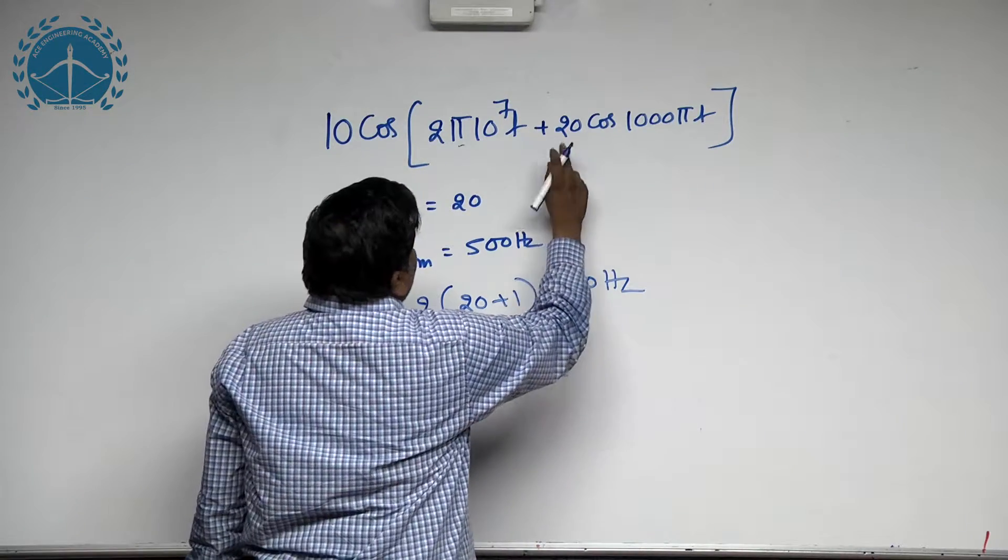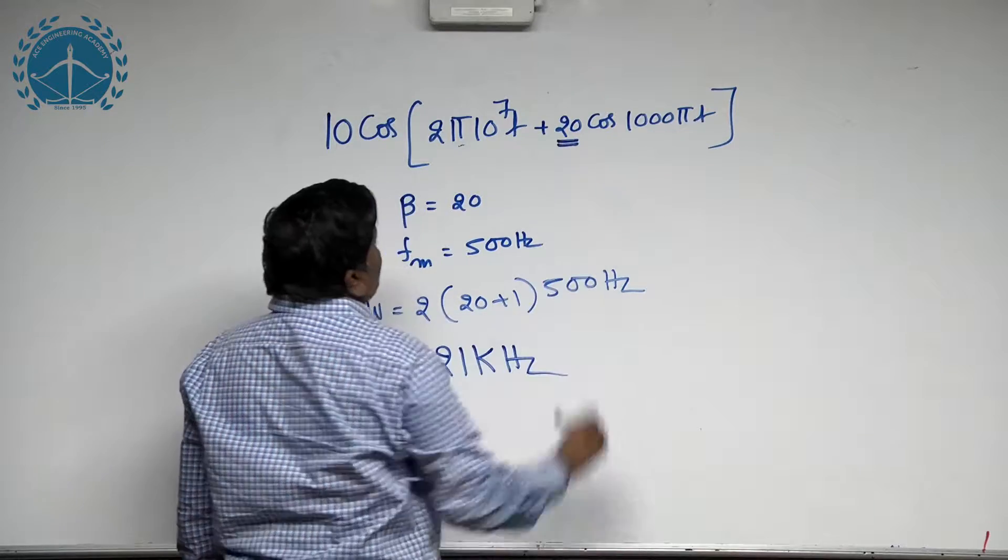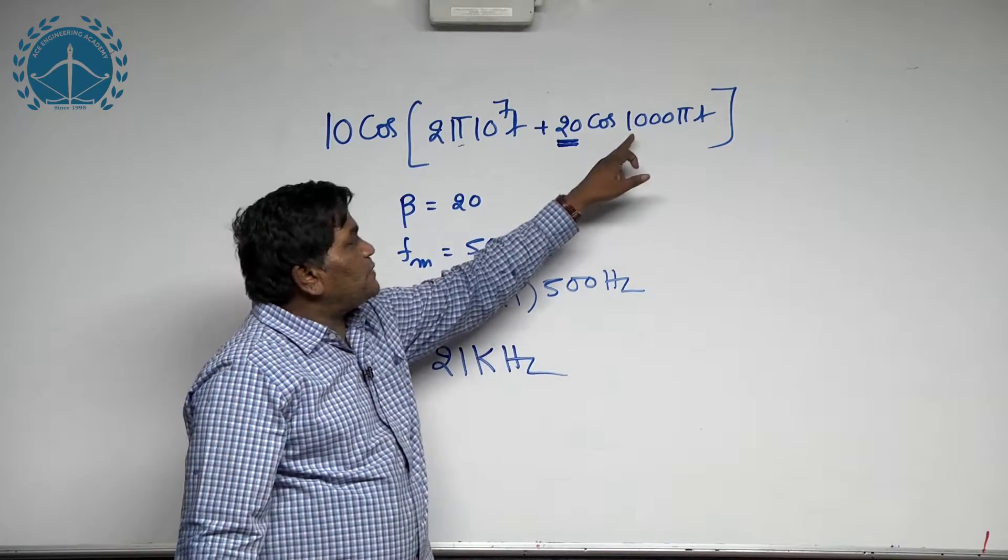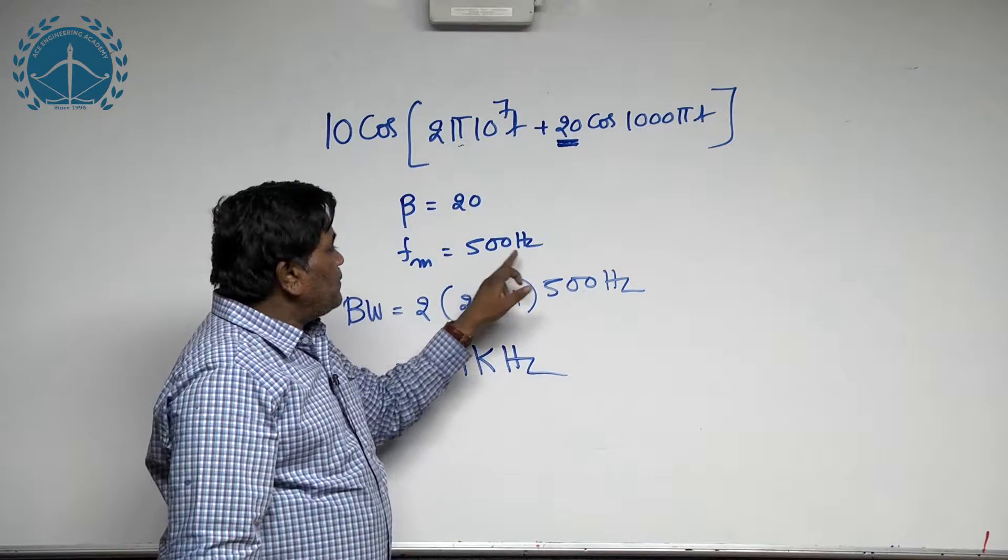In this equation, the modulation index beta is equal to 20, and the message frequency is equal to 500 hertz.